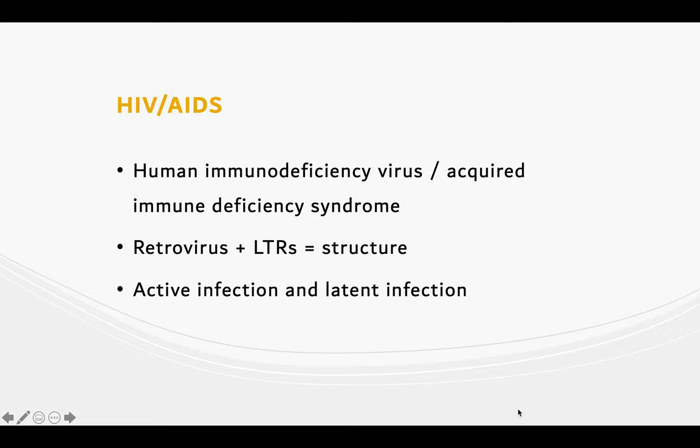Structurally, it is a retrovirus with an RNA genome with two long terminal repeat sequences at both sides, and comprises two infection responses. It actively replicates causing symptoms in the individual, as well as infecting cells that remain dormant until signaled otherwise. Antiviral therapies cannot recognize the latency reservoirs, thus the reduced effectiveness.